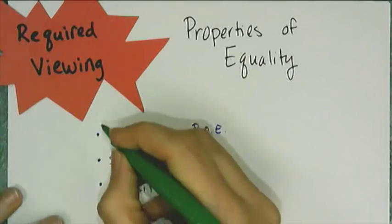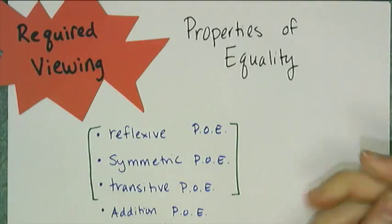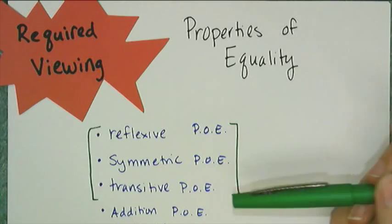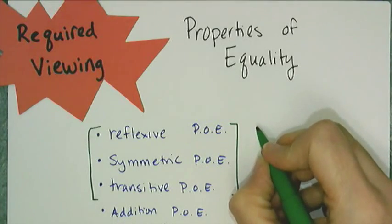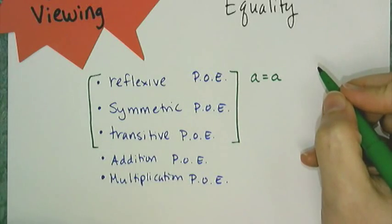So the first three here, reflexive, symmetric, and transitive, really aren't used for solving equations. These are more used for things like proof and algebra two. The reflexive says very simply that A equals A, and we don't use that when we solve equations.